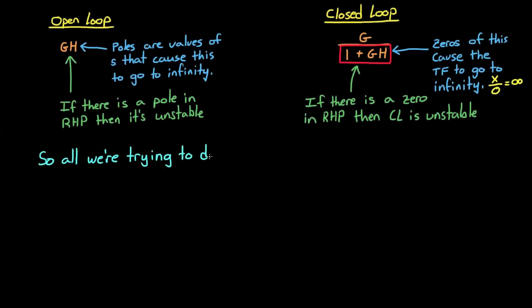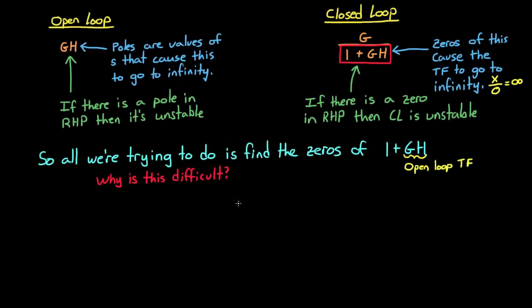So all we're really trying to do is find where the zeros are of 1 plus GH, or take the open-loop transfer function, add 1 to it, and then find the location of the zeros. Why is this so difficult? Well, for one thing, if your open-loop system is high order, let's say 50 poles or something, then finding the roots of that large 50th order equation can be difficult by hand.